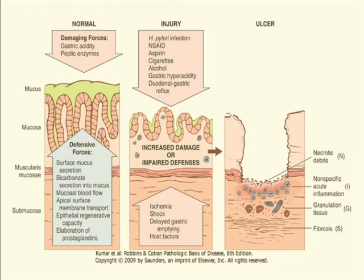But when these defensive forces are decreased due to some cause, injury or substances like H. pylori infection, NSAIDs, aspirin, cigarettes, alcohol, etc., can damage the mucosa and hence can lead to ulcer formation that may consist of necrotic debris, nonspecific acute inflammation, granulation tissue, and fibrosis.